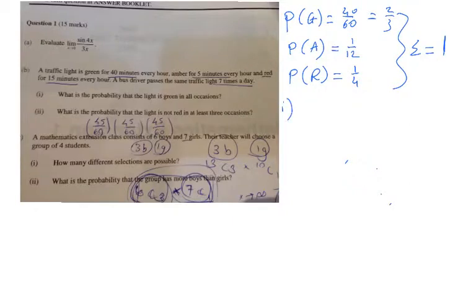Part I: What is the probability that the light is green in all occasions? You can use the binomial theorem here, but I think that'll be a bit of an overkill. Let's start with the first traffic light.